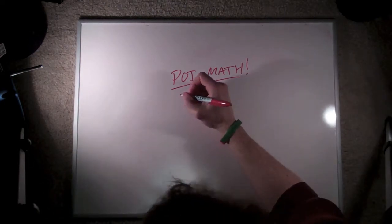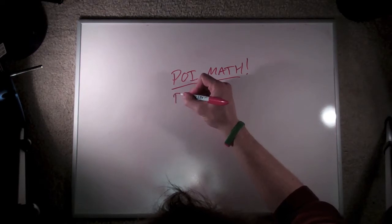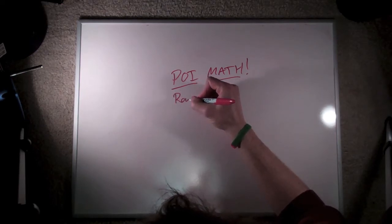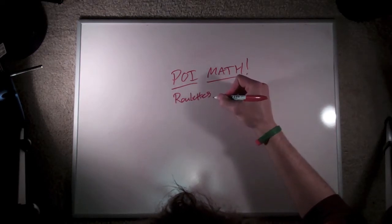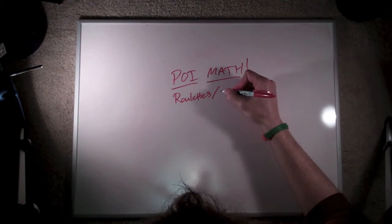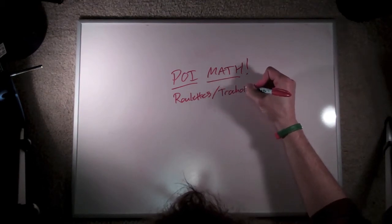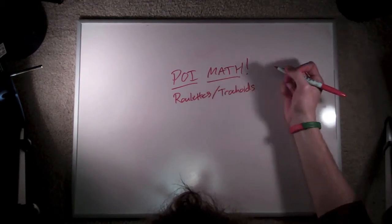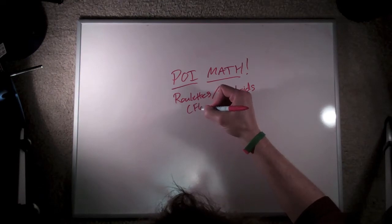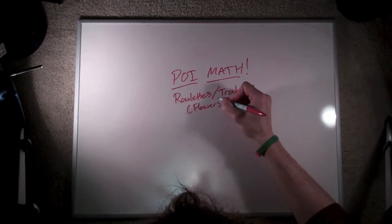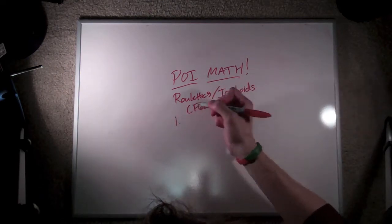I actually don't think it's a bad idea to learn, and we're going to go through it in the next 10 minutes. What we're going to talk about today is the math of roulettes, which are sometimes called trochoids. More specifically, we talk about epitrochoids and hypotrochoids, which are essentially a synonym for the concept of flowers in Poi.